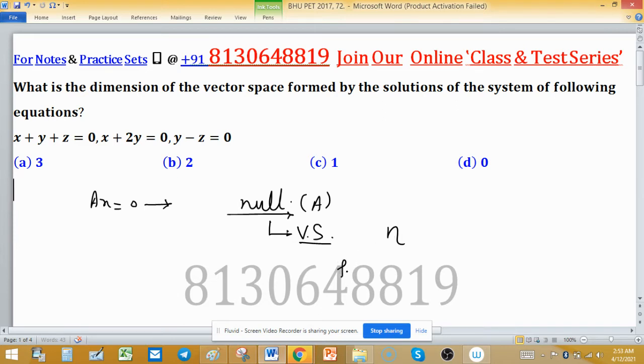By the rank-nullity theorem, rank (normally represented by rho) and eta equals the number of columns, which is three here. So write the system.